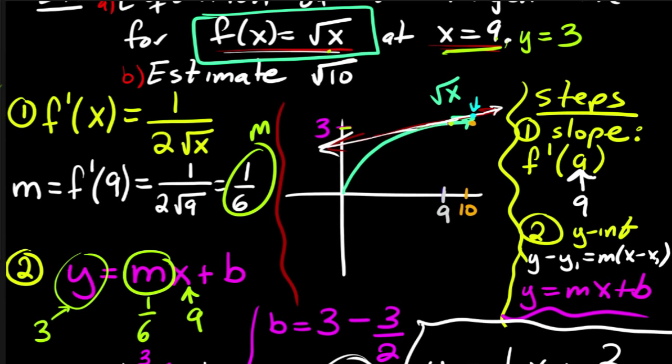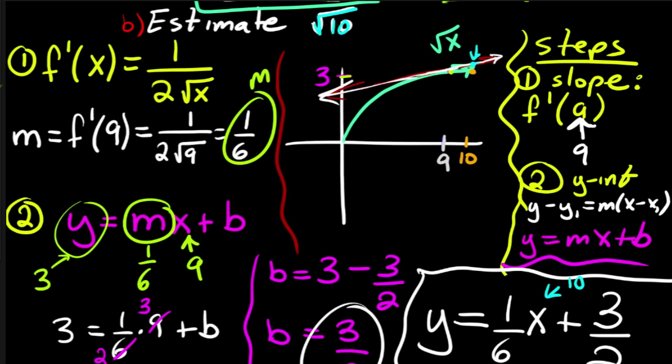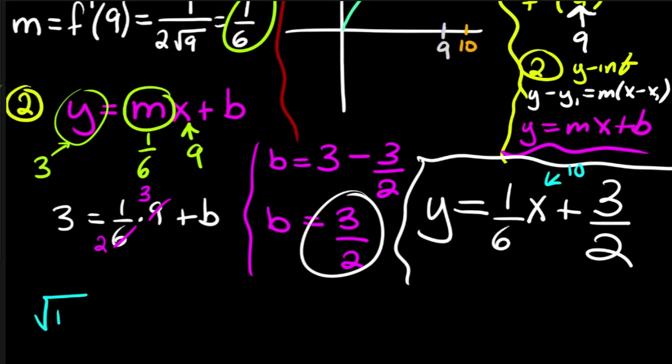So this little orangey guy is very close to this blue guy, which is on my tangent line. And so, if I plug in 10, instead of plugging it into the square root, if I plug it into my tangent line, which is right here, what I should get is a number that's very close to the actual value. So let's try that. So what we're saying is that the square root of 10 is approximately 1 sixth times 10 plus 3 halves.